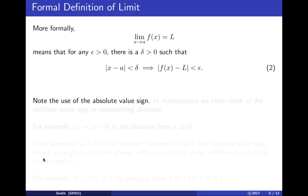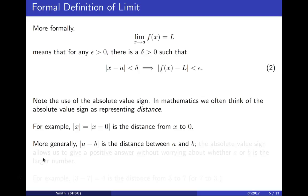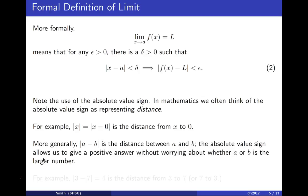Note the use of the absolute value sign. In mathematics it's common to think of the absolute value sign as representing distance. The absolute value of x, which we insist is non-negative, is the distance from x to 0. More generally, the absolute value of a minus b is the distance between a and b. The absolute value sign allows us to give a positive answer without worrying about whether a or b is the larger number.